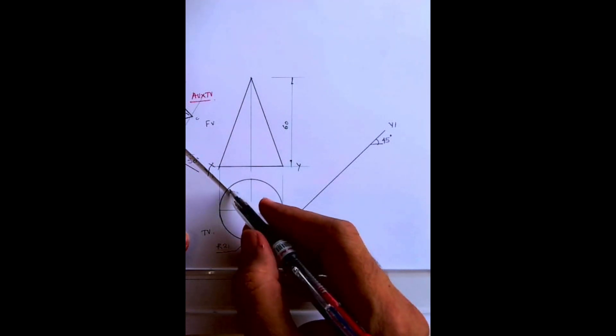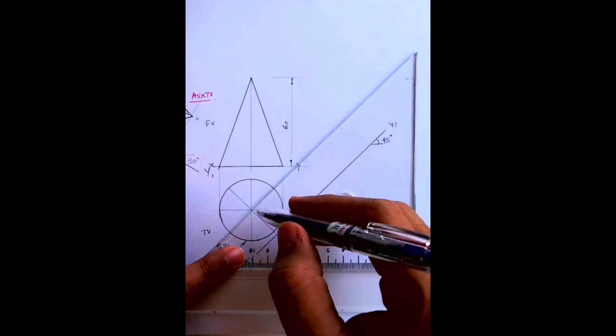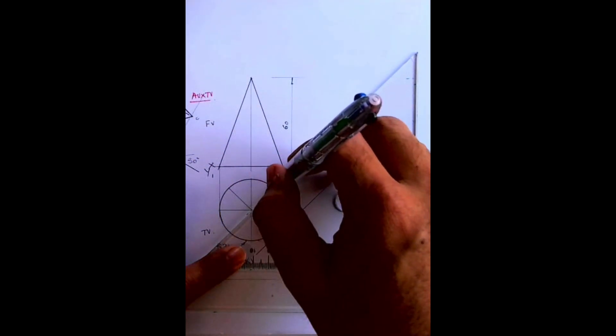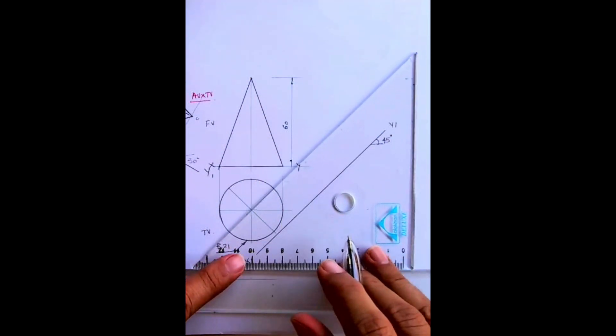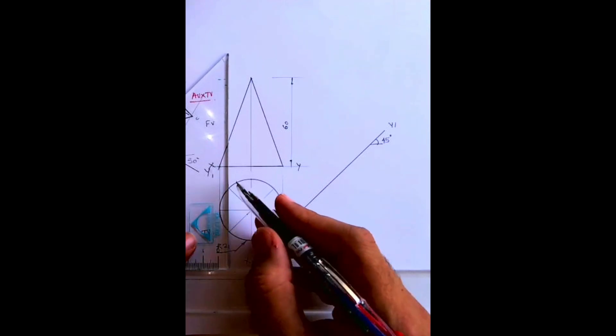We'll divide circle into eight parts, so we are dividing cone into eight parts. Why we are doing this? Because we don't have many points when you want to transfer. See, all these points we don't have.